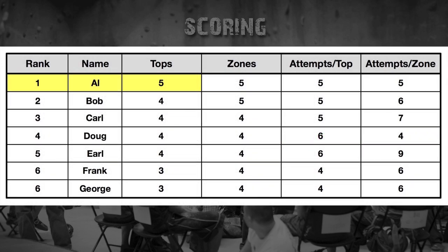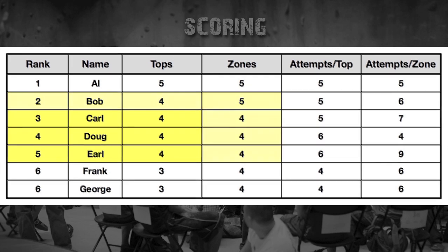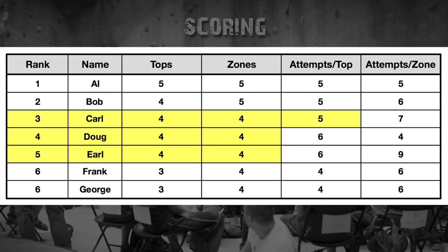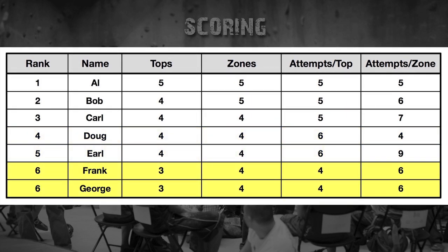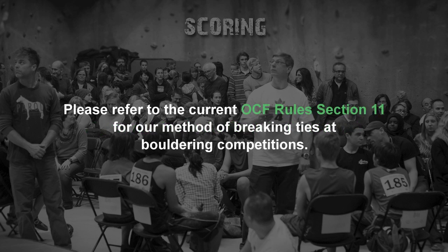The competitor who tops the most problems is ranked the highest in that round. If two or more competitors have the same number of tops, then the competitor who has the most zones is ranked higher. If two or more competitors have the same number of tops and the same number of zones, then the competitor with the least number of attempts to get their tops is ranked higher. If two or more competitors are still tied after that, then the competitor with the least number of attempts to get their zones is ranked higher. If two or more competitors are still tied after the final round, then the competitor with a higher ranking during the qualification round will be ranked higher. Please refer to the current OCF rules section 11 for the method of breaking ties at bouldering competitions.